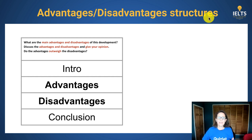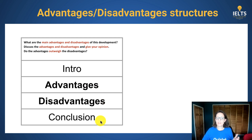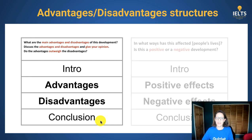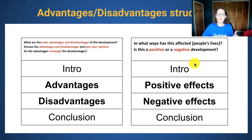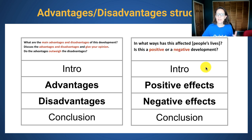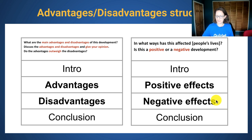So in this structure you've got the four-paragraph system: introduction, write about the good things, the bad things and conclusion. If you're asked to talk about in what ways this has affected something — is it positive or negative — then follow the same structure. Talk about the positive effects and then the negative effects.